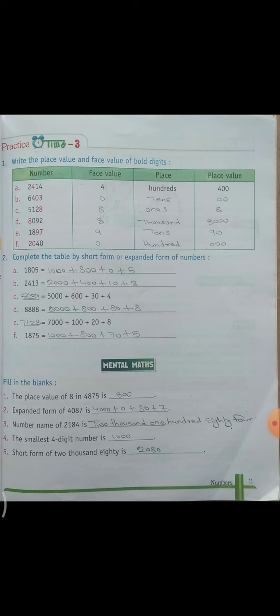B part ke andar 2413. To 2000 plus 400 plus 10 plus 3. And c part ke andar apne ko expanded form dhe rakhe. Isko apne short form me likhna hai. Toh ye kya aegha 5634. Aise ap iske remaining parts bhi karayenge.